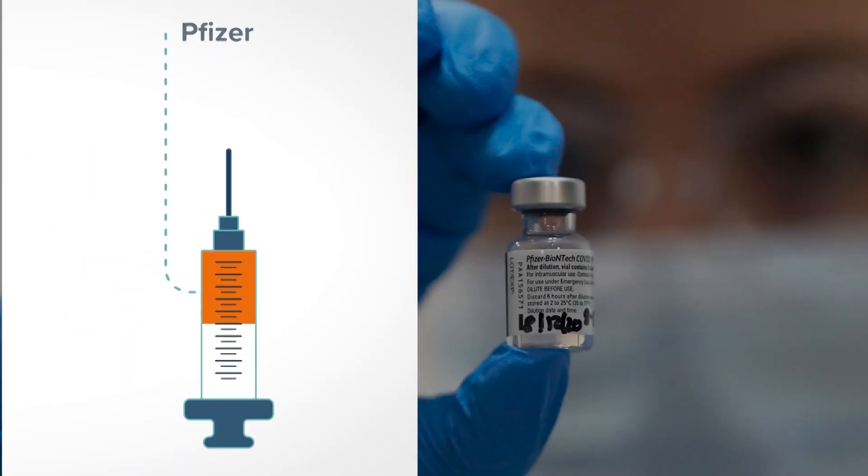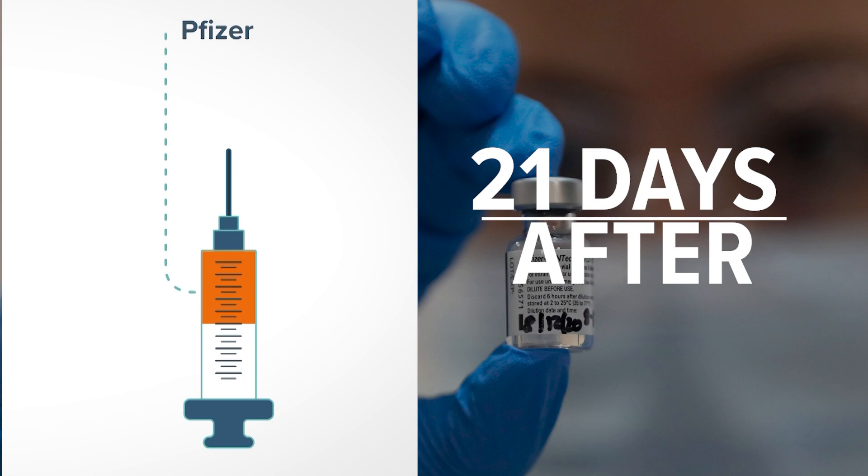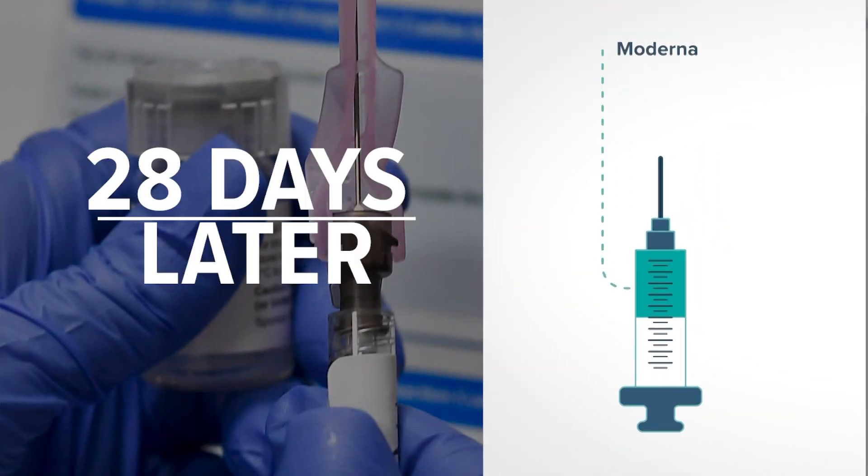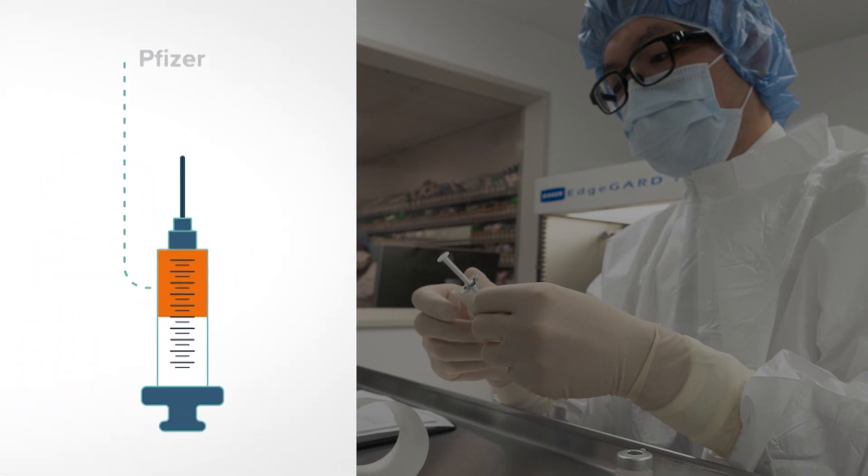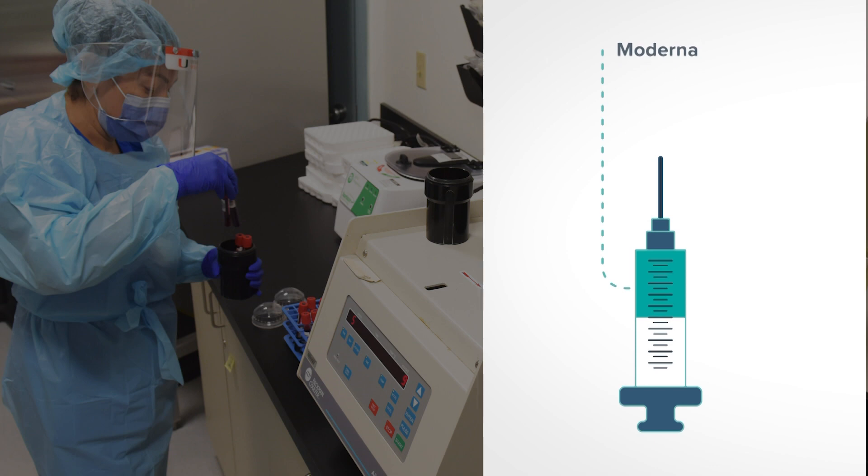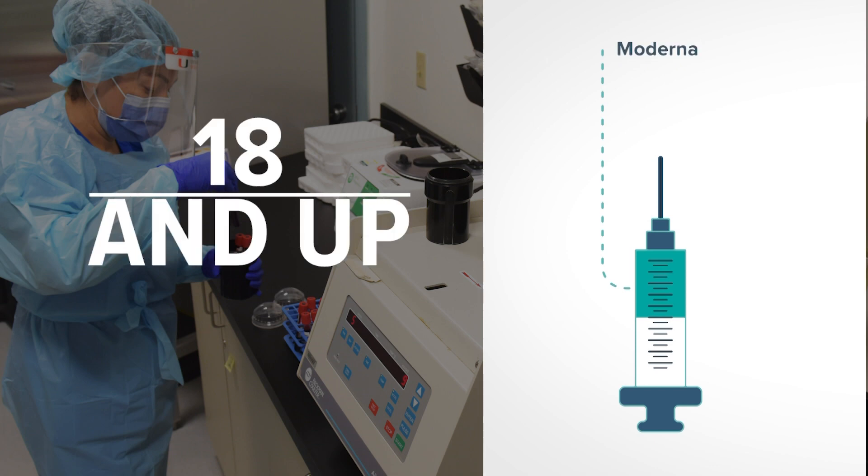Now the differences. Pfizer's vaccine requires your booster shot three weeks or 21 days after the first. Moderna's booster comes four weeks or 28 days later. Pfizer's vaccine was approved for use in people ages 16 and older. If approved, Moderna's will be available for people 18 and up.